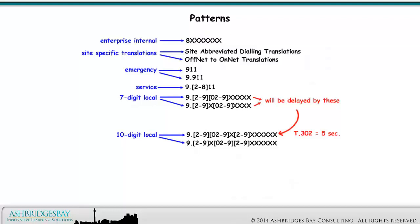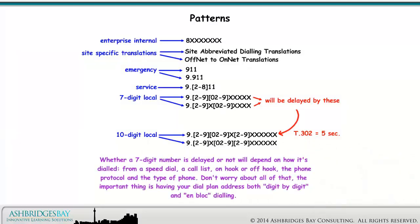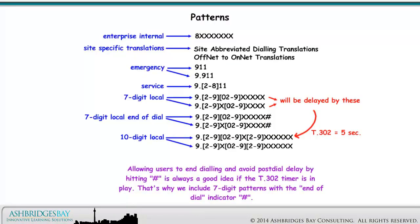7-digit local calls will be delayed when dialing digit by digit due to the 10-digit patterns. Enterprise 20 sets the T302 timer down from its default of 15 seconds to 5 seconds, so the delay will be only 5 seconds. Whether a 7-digit number is delayed or not depends on how it's dialed — from a speed dial, a call list, on-hook or off-hook, the phone protocol, and the type of phone. The important thing is having your plan address both digit-by-digit and en-bloc dialing. Allowing users to end dialing and avoid post-dial delay by hitting the hash key, pound key, number sign, or octothorpe is always a good idea if the T302 timer is in play. That's why we include 7-digit patterns with the end-of-dial indicator, pound.